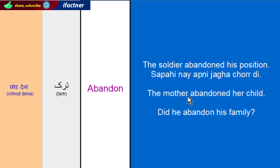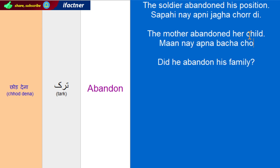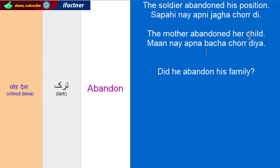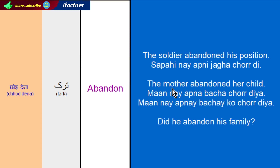Another sentence is: The mother abandoned her child. Mother is Maa, her is Apana, and child is Bachha. So we will say it in Hindi and Urdu as: Maa ne apana Bachha chhoddia. Or you can also say: Maa ne apne bachay ko chhoddiya. The mother abandoned her child.